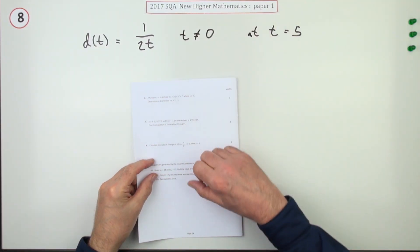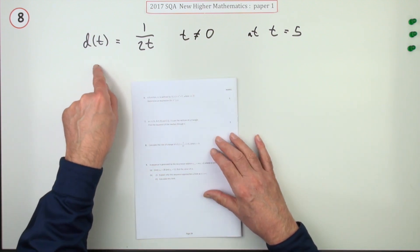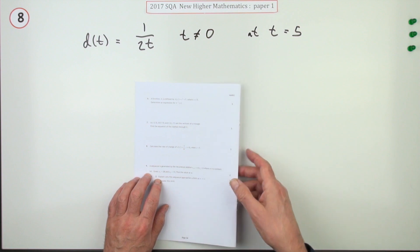Number eight from paper one of the 2017 New Higher Mathematics. Just three marks here. Find the rate of change - what's the rate of change of this function when t is five?